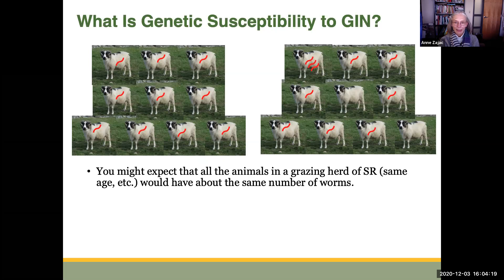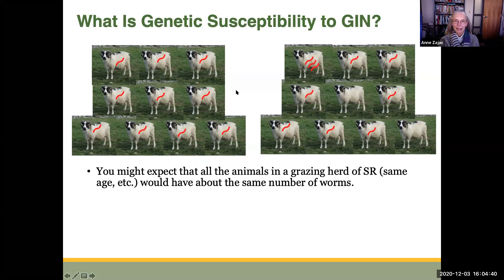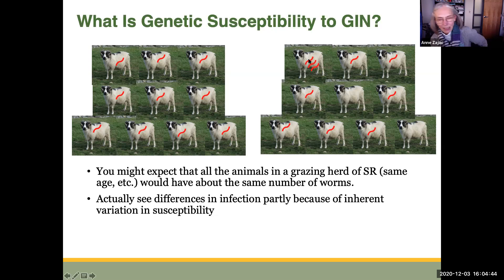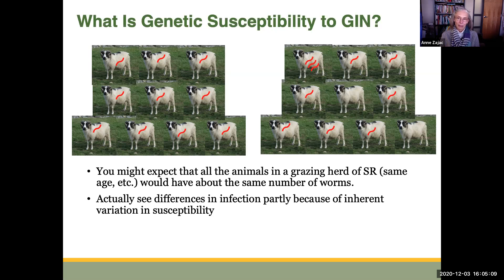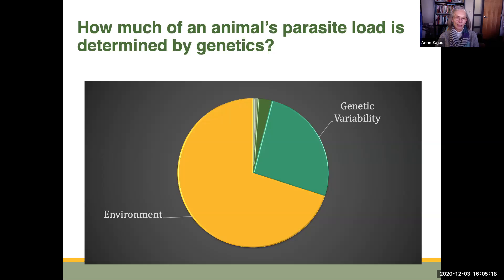You might expect that all animals in a grazing herd of small ruminants — if they're all the same age, getting the same diet, everything the same — would have about the same number of worms. But in fact, what we see is quite different. Even when these animals are the same in every other respect, we see differences in the number of worms they carry, because of inherent variation in susceptibility to parasites. That is in part due to this inherent variation in susceptibility, and we do have this genetic variation in susceptibility really determined by the immune response.